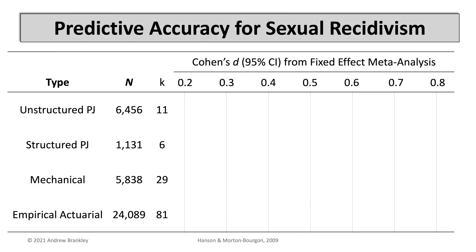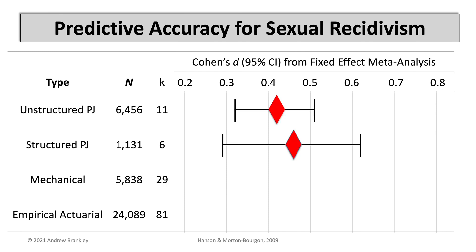Focusing on sexual recidivism, Hansen and Mortenburgon's 2009 meta-analysis is probably the best example of a comparison between the four categories of tools. Going from left to right in this hybrid table figure, we have four rows for the categories of tools and the sample size from k number of studies. The remaining space shows Cohen's d, an effect size which translates to the standard mean difference — a Cohen's d of one means recidivists typically scored one standard deviation higher on that tool than non-recidivists.